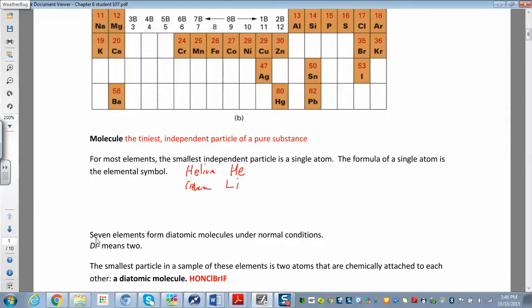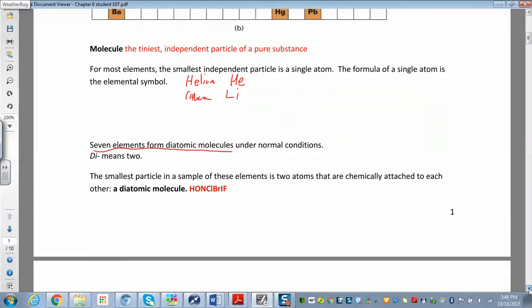But there are seven elements that form diatomic molecules under normal conditions. Di means two. And those are hydrogen, oxygen, nitrogen, chlorine, bromine, iodine, and fluorine. So Honkelbrief, Brinkelhoff—there's a bunch of different ways to remember which ones form diatomic molecules. That means under normal conditions, you don't see hydrogen by itself. You see H2. O2, N2, Cl2, Br2, I2, and F2.